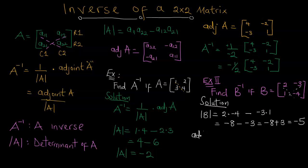Next is the adjoint of matrix B. The elements on the leading diagonal are 2 and negative 4 — we flip them, so negative 4 takes the place of 2 and 2 takes the place of negative 4. Multiplying the other diagonal elements by negative 1: negative 1 times negative 3 gives positive 3, and negative 1 times 1 gives negative 1. So the adjoint of B is [[-4, 3], [-1, 2]].